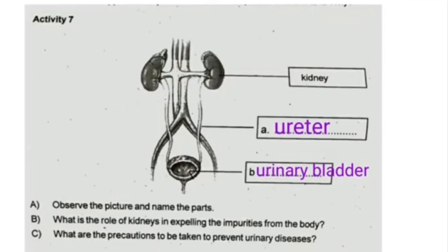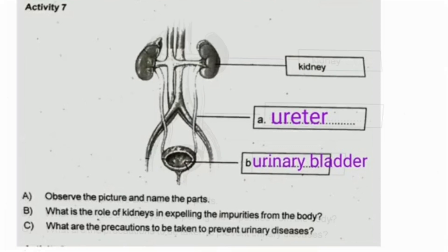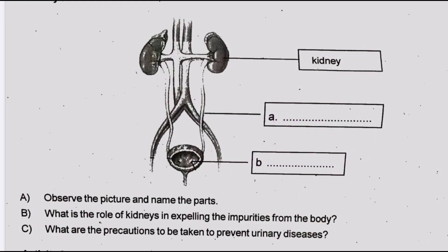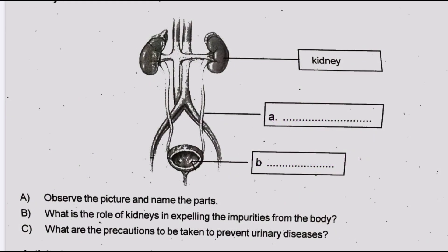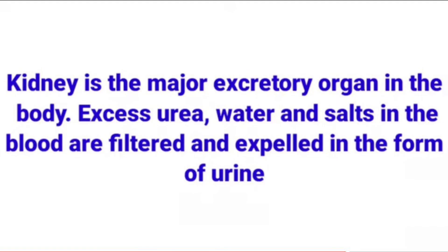A is the ureter and B is the urinary bladder. The role of the kidney in expelling impurities from the body: the kidney is the major excretory organ. Excess urea, water, and salt in the blood are filtered and expelled in the form of urine.